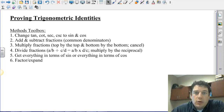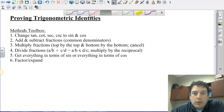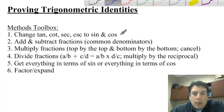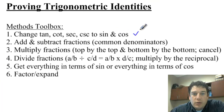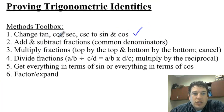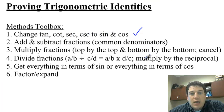As we look at the different things we need to consider, the number one thing I told you to do is always, always, always change tangent, cotangent, secant, and cosecant to sines and cosines.